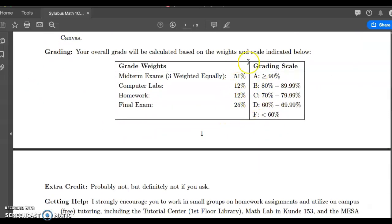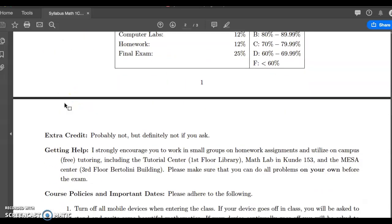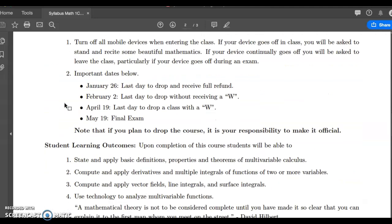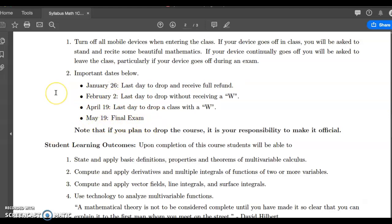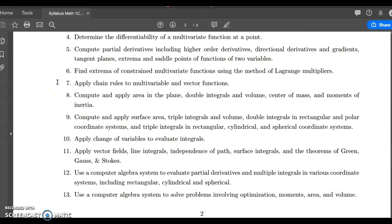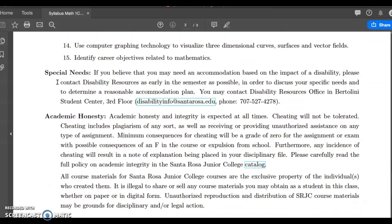Your grading breakdown is right here. Midterms 51%, computer labs 12%, homework 12%, final exam 25%. So fairly standard, maybe except the labs. Like I said before, important dates - make sure you mark on your calendar May 19th. I am not allowed to change that final exam. And then here's all the material that we're going to cover throughout the semester. You can read through that if you want.